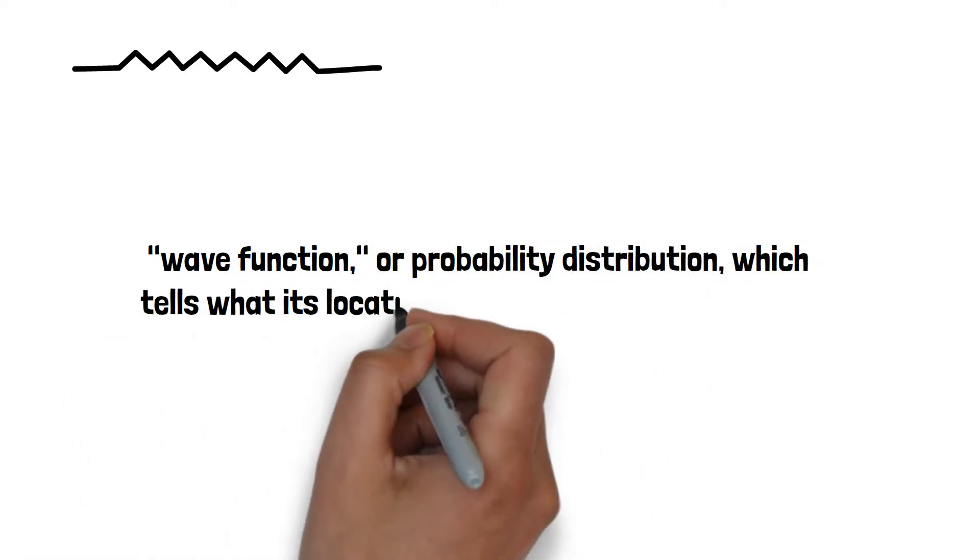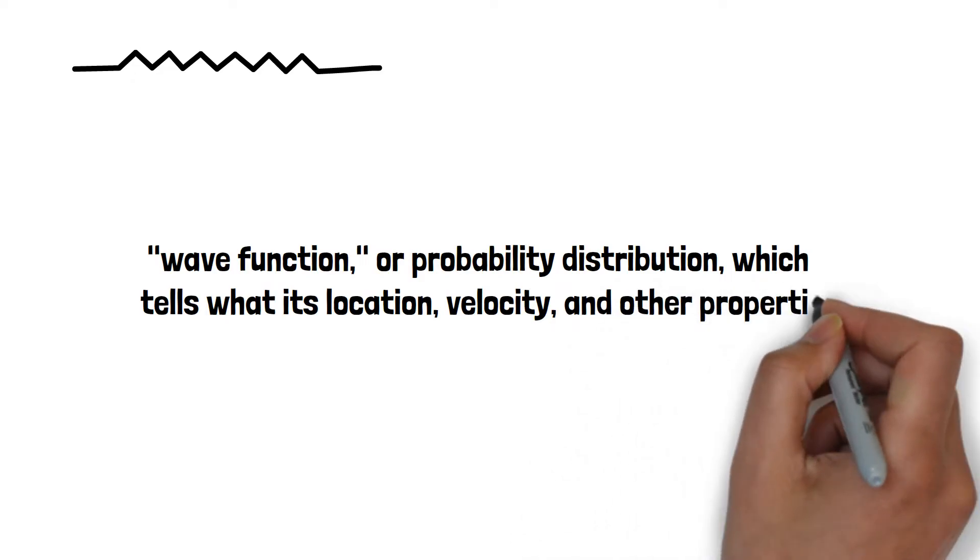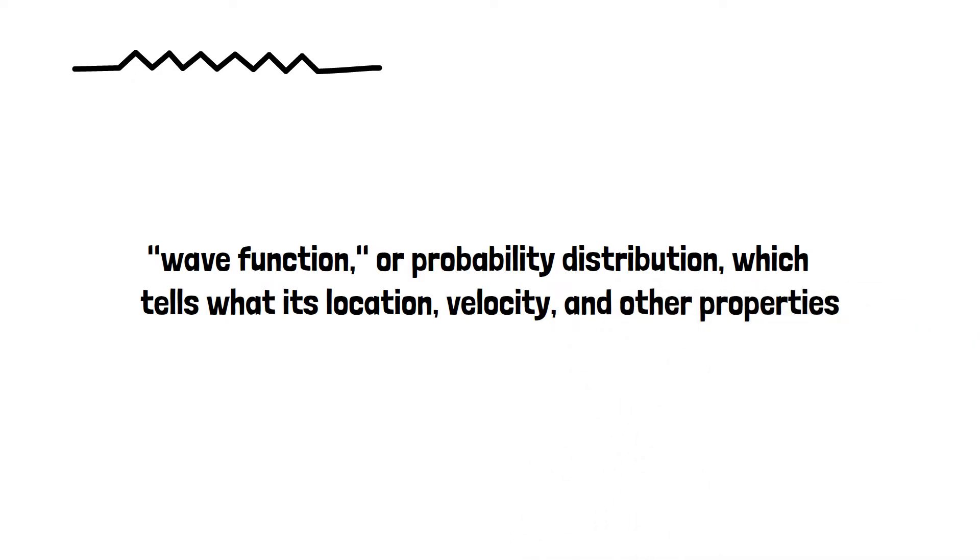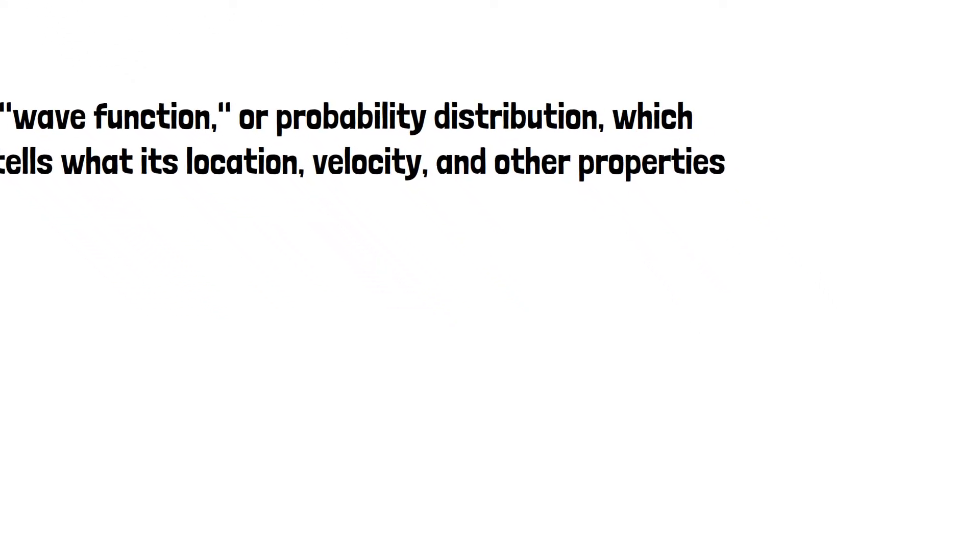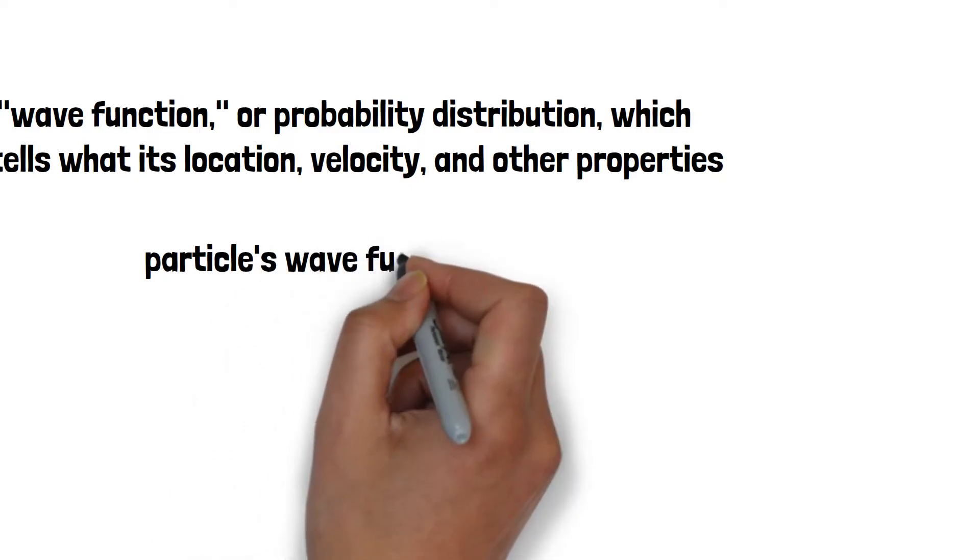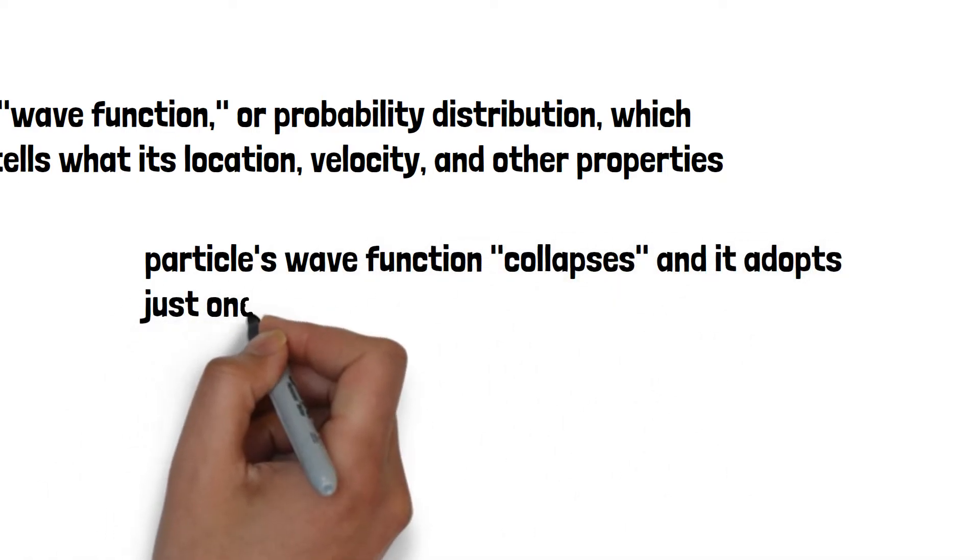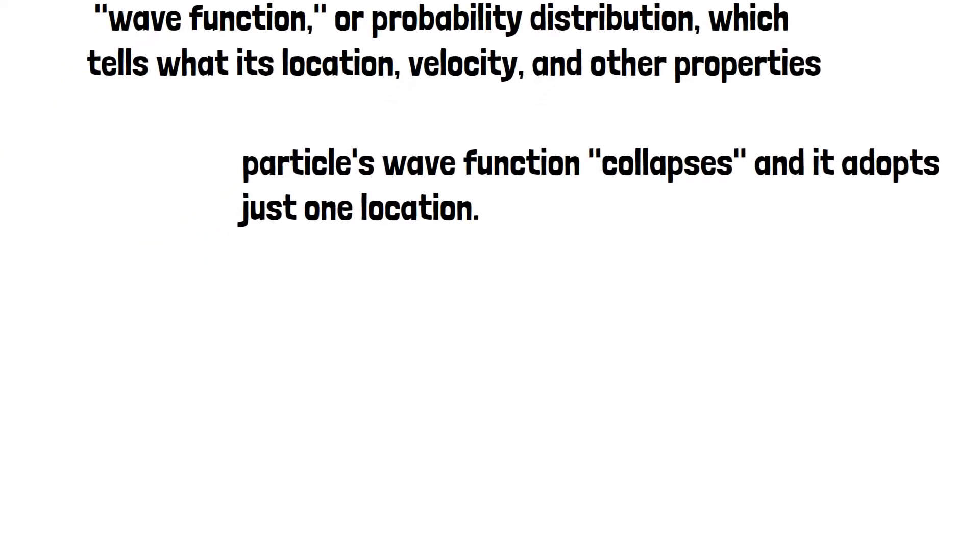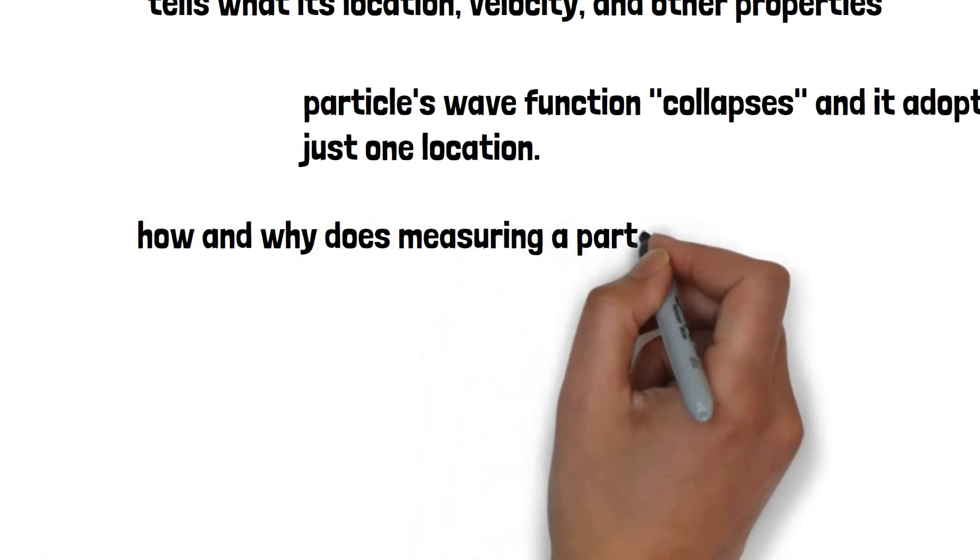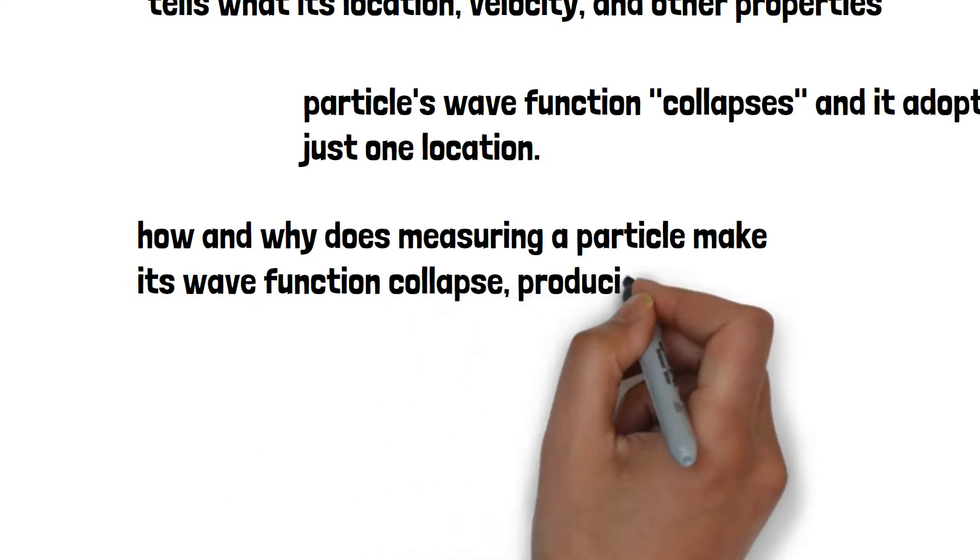The wave function tells what a particle's location, velocity, and other properties are more likely to be, but not what those properties are. The particle has a range of values for all the properties until you experimentally measure one of them—its location, for example—at which point the particle's wave function collapses and it adopts just one location. But how and why does measuring a particle make its wave function collapse, producing the concrete reality that we perceive to exist?